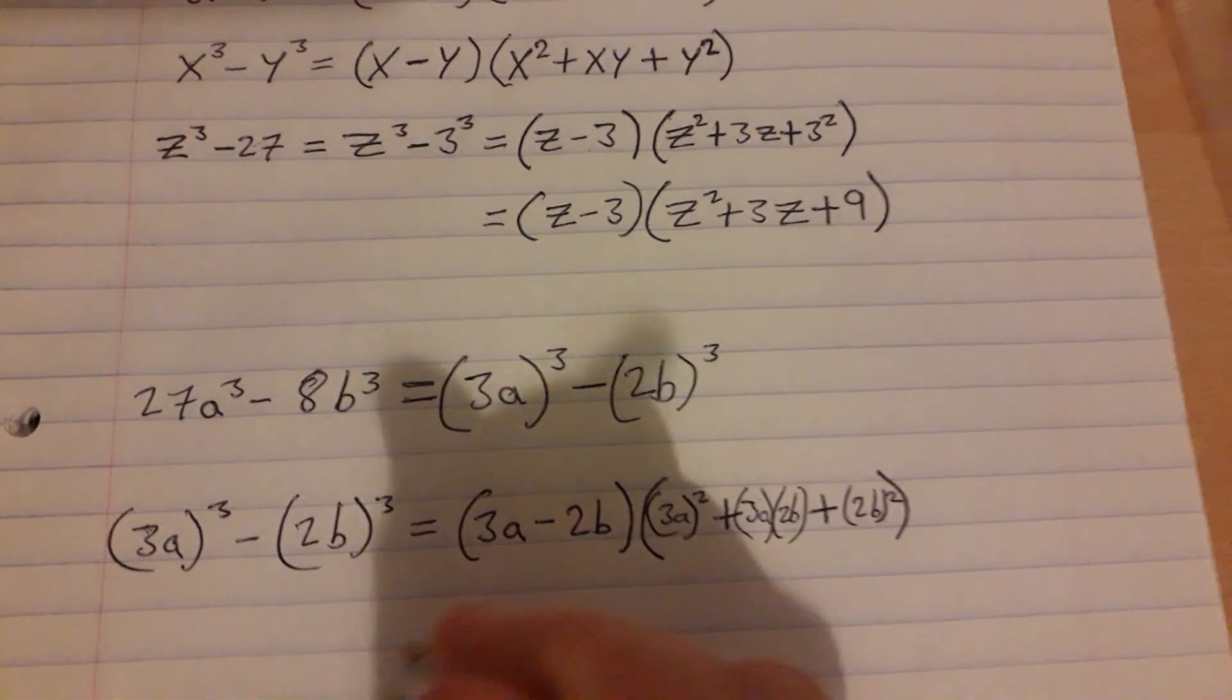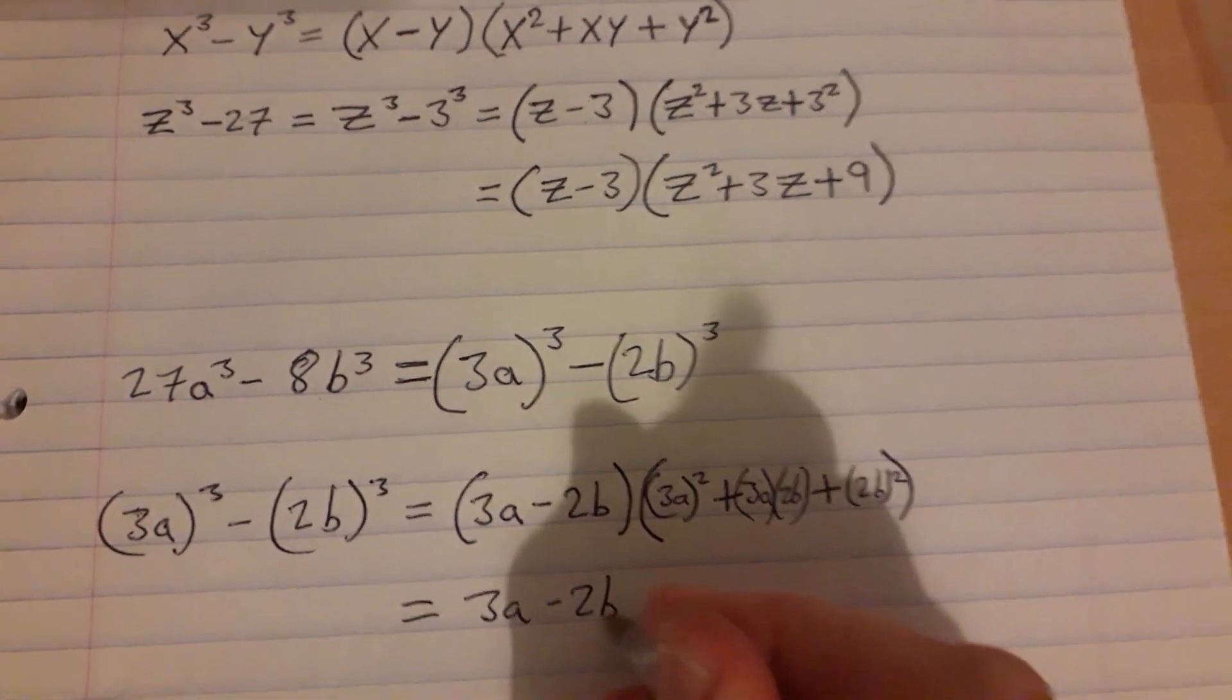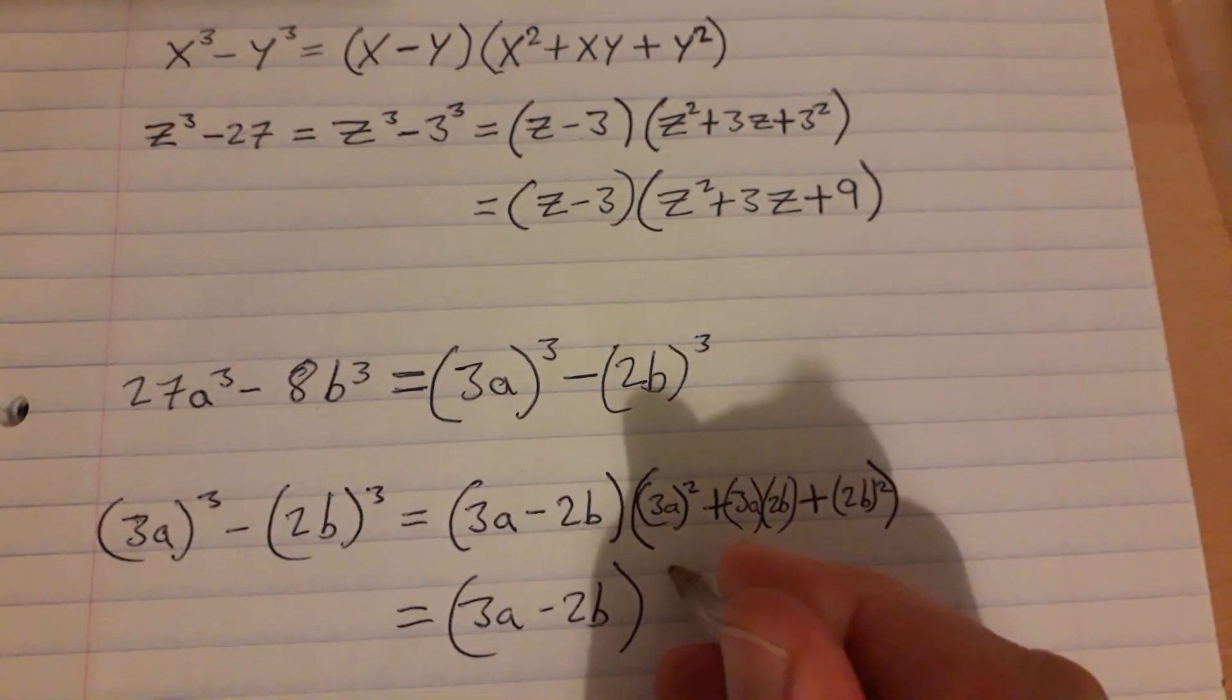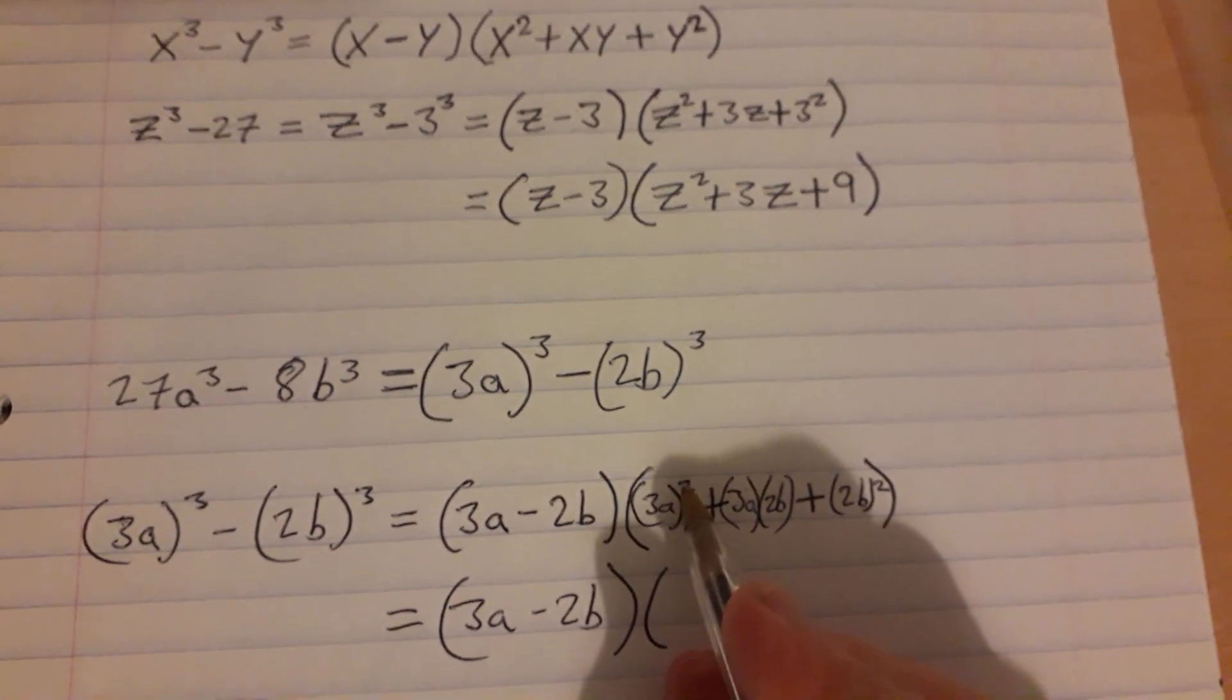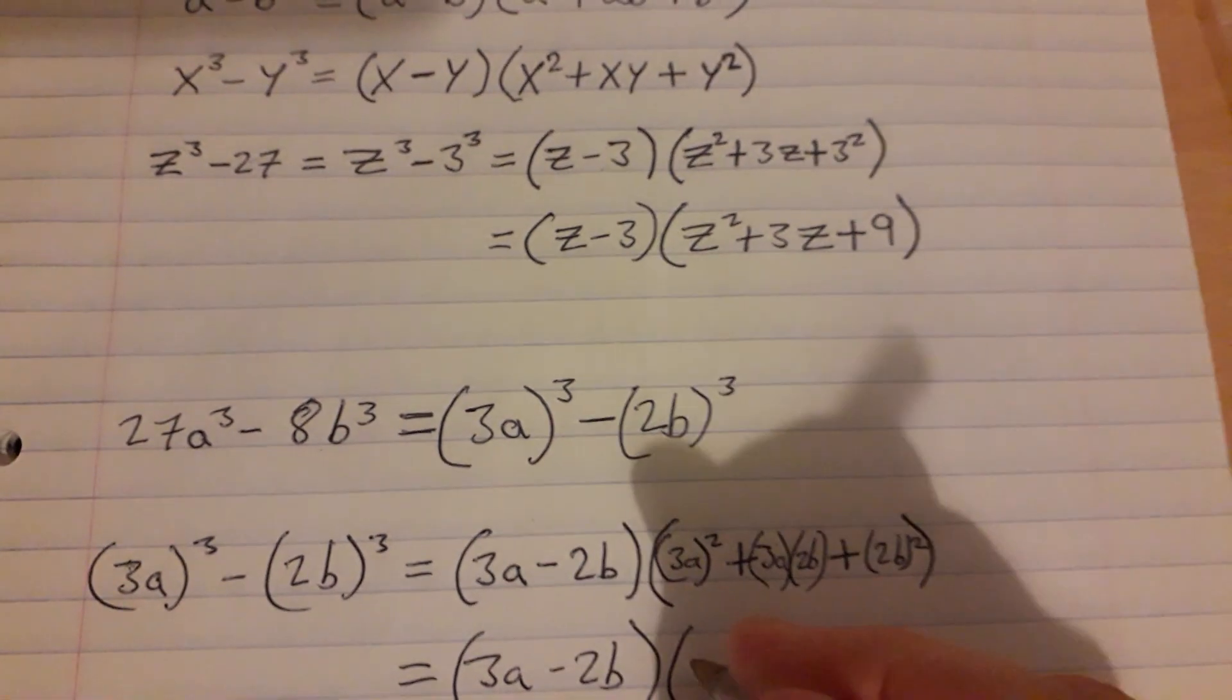So tidying it all up, that's 3a minus 2b. That'll stay the same, there's nothing we can do to simplify that or tidy that up. 3a all to be squared means 3a by 3a, which is 9a squared.